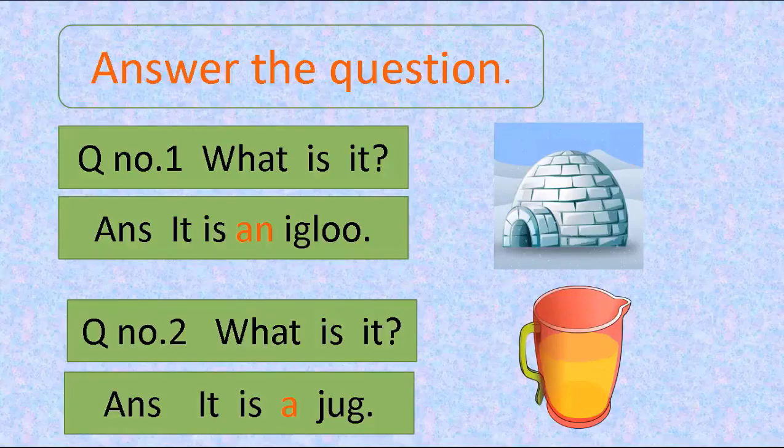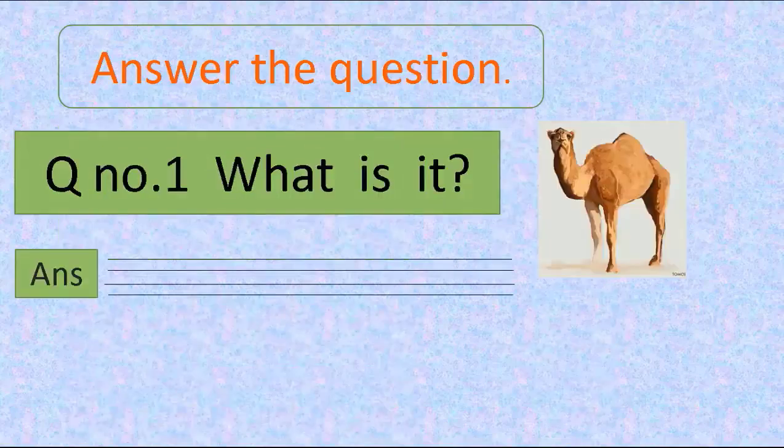In this you have seen that with consonant word we use 'a' and with vowel word we use 'an'. You are genius! Let's come to the question.